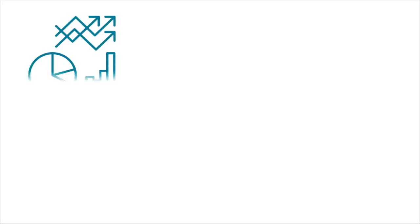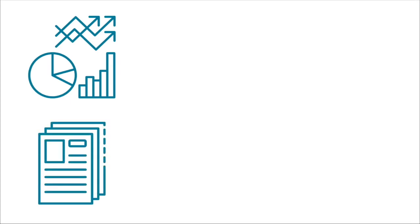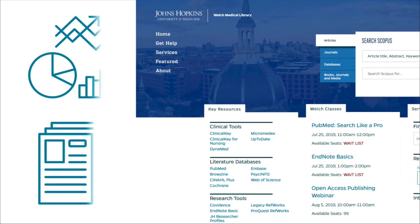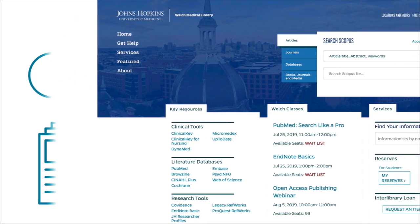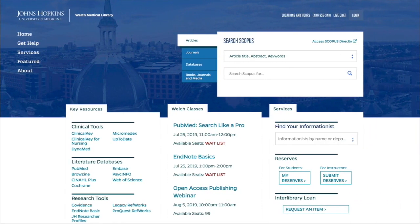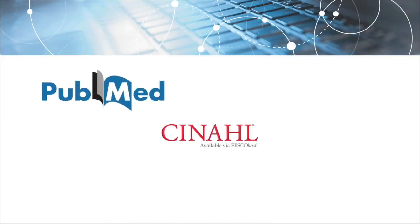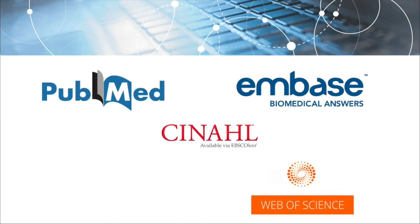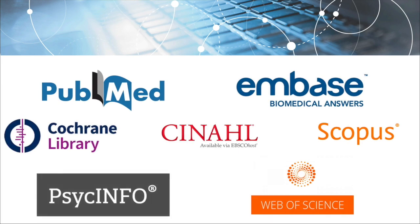Whether you're looking for a few high-quality research articles on a specific topic or you're conducting a comprehensive literature review, the Welch Library website is where you'll want to go. Through this website you can access a wide range of bibliographic databases. In this video you'll learn about a few of the key databases that are available to you as part of the Hopkins community.